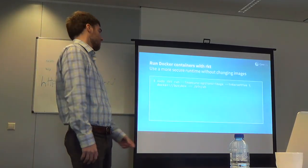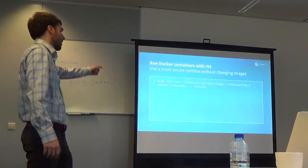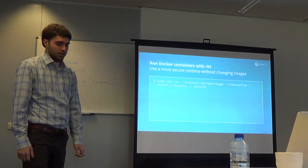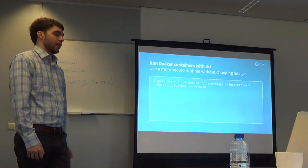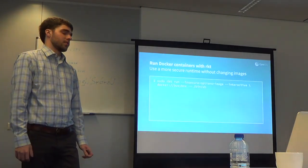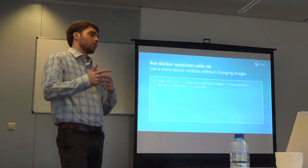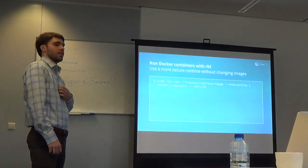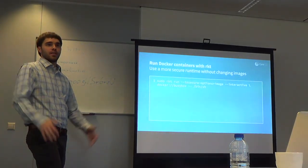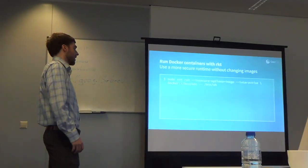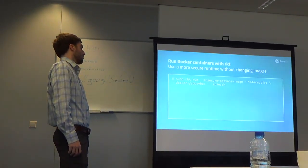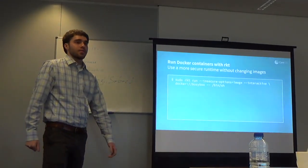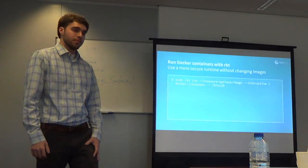You can also run Docker containers with Rocket. If your build system already outputs Docker containers and you want to try Rocket, you can benefit from these security practices without changing your images. The insecure-options flag is needed because Docker image signing is still new and not standards-based. The docker:// prefix tells Rocket this is a Docker image.